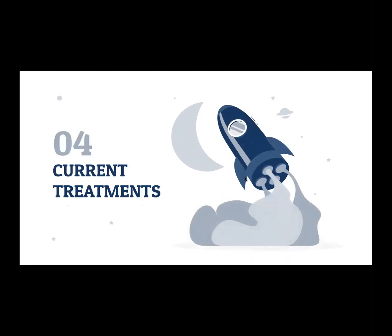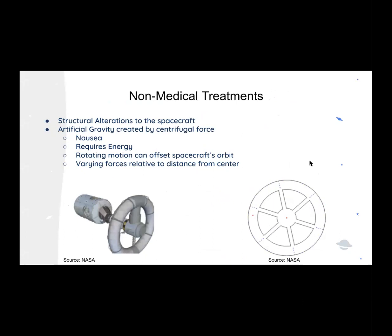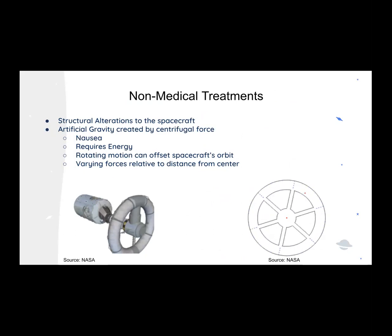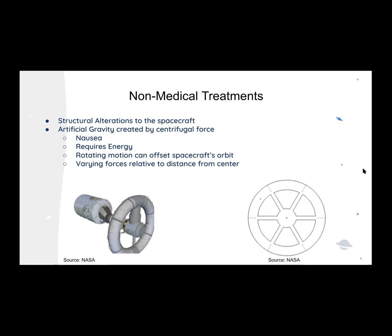Now I'm going to get into the current treatments for spaceflight osteopenia. Non-medical treatments include making structural alterations to the spacecraft. Artificial gravity can be created by centrifugal force, but the drawbacks are that it can cause nausea and requires a significant amount of energy over a sustained period of time. Also, the rotation can change the orbit of the spacecraft, and the distribution of forces will change depending on where you are on the spacecraft — those closer to the center feel less force than those farther away.